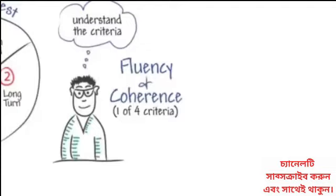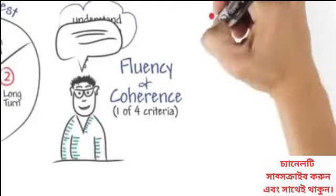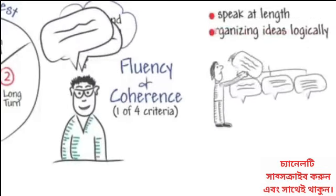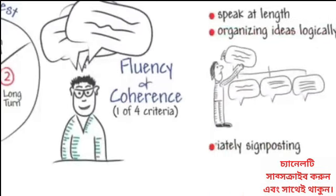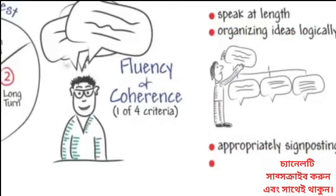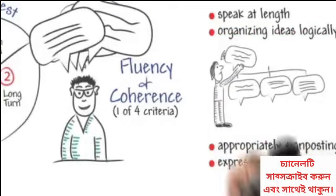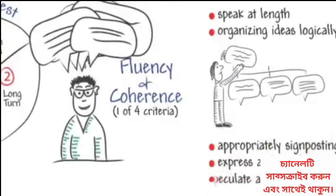We'll cover the other three in later videos. Fluency and coherence refer to your ability to speak at length, including organizing ideas logically and appropriately signposting. It also refers to your ability to express and justify opinions and to discuss and speculate about issues without long pauses or repetition of the same words.